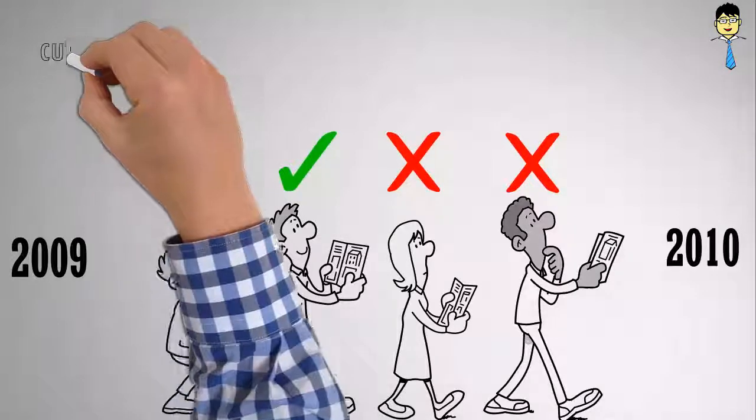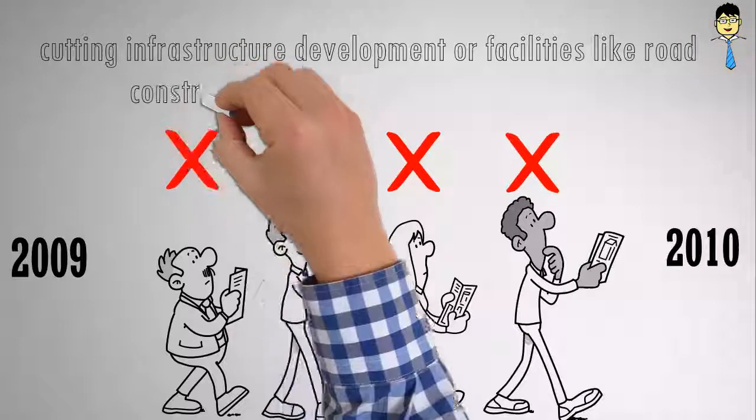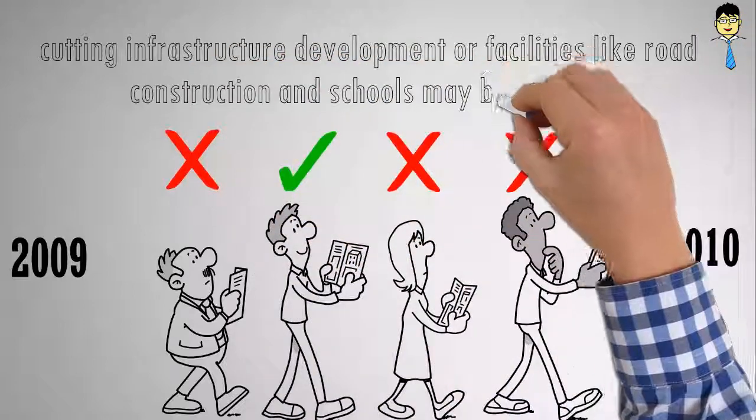The reduction in government expenditure is cutting infrastructure development or facilities like road construction and schools may be stopped in order for the country to reduce demand pull inflation.